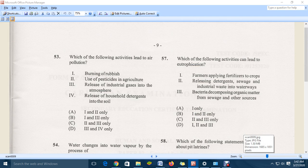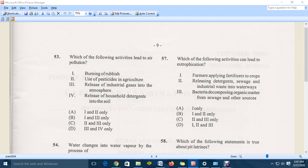Which of the following activities can lead to eutrophication? Which combination here? Farmers applying fertilizer to crop, release detergent sewage industrial waste into waterways. So D is the correct answer here. So all three are accepted.